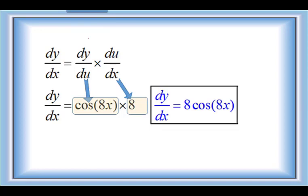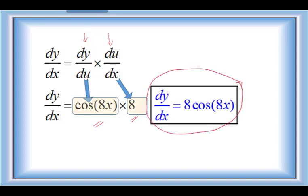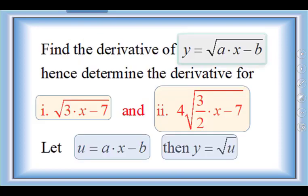This represents the chain rule: the first part dy/du and the second part du/dx form the chain. You could have as many links as needed — if the function decomposes into three functions, you multiply by a third strand. So dy/du = cos(8x) multiplied by du/dx = 8 gives 8·cos(8x) as the derivative of sin(8x).